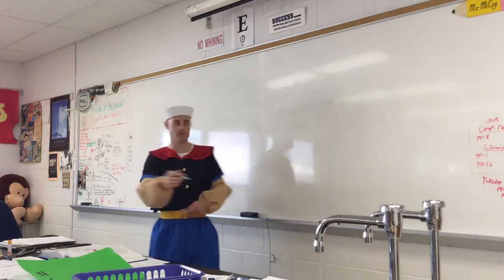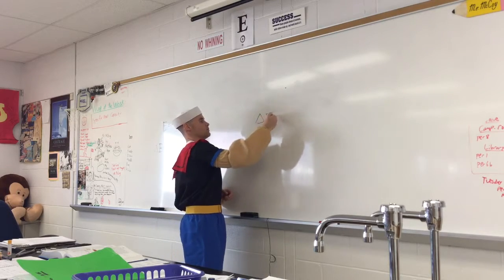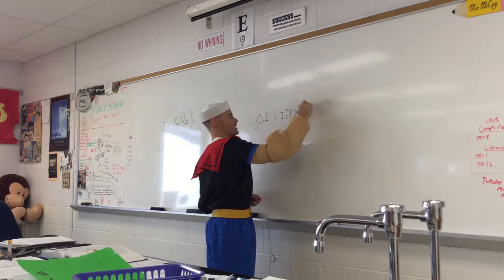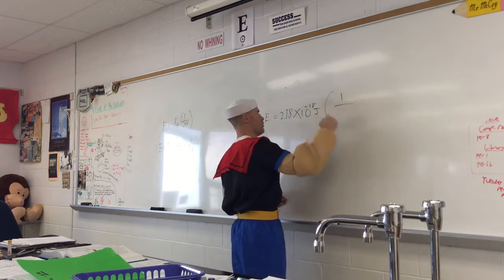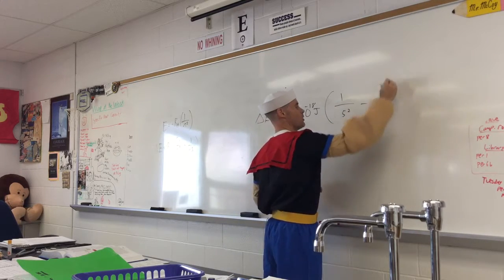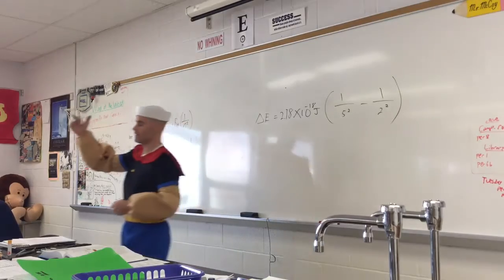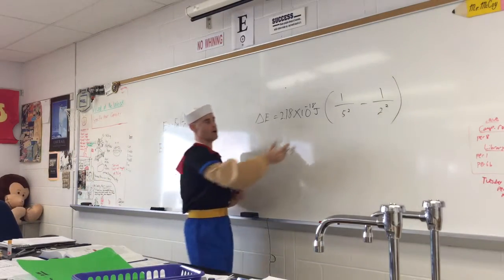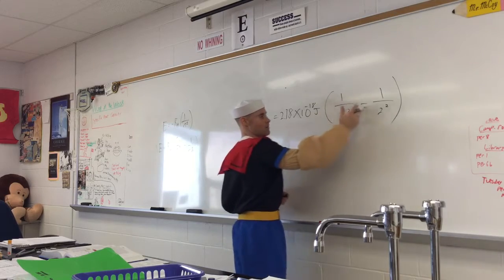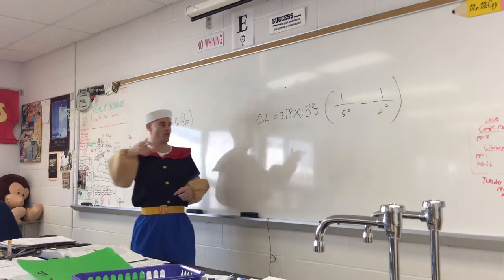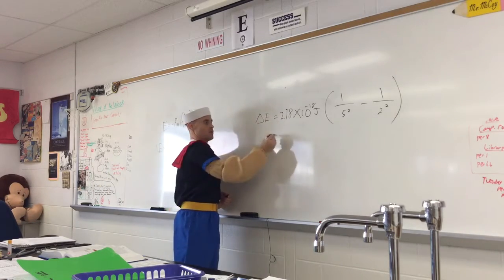I'll use this one since everybody did that. So delta E equals 2.18 times 10 to the negative 18 joules, times one over... now the initial is five minus one over two squared, right? Because the initial is where it's already excited and it falls back to the second level. This is a Balmer series.